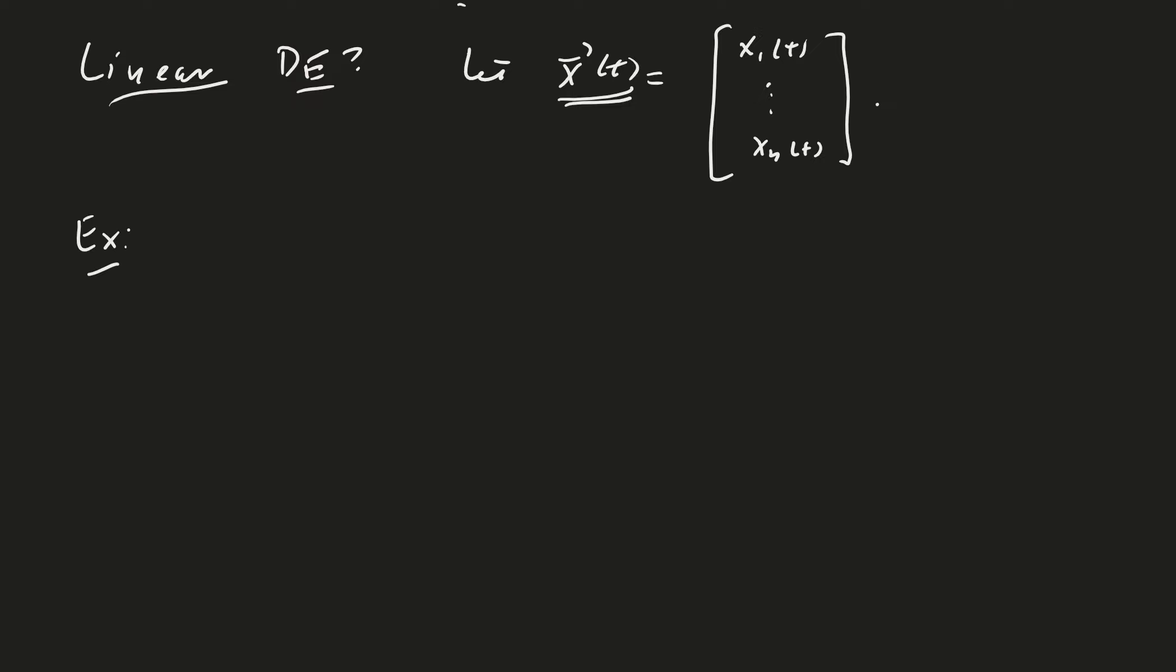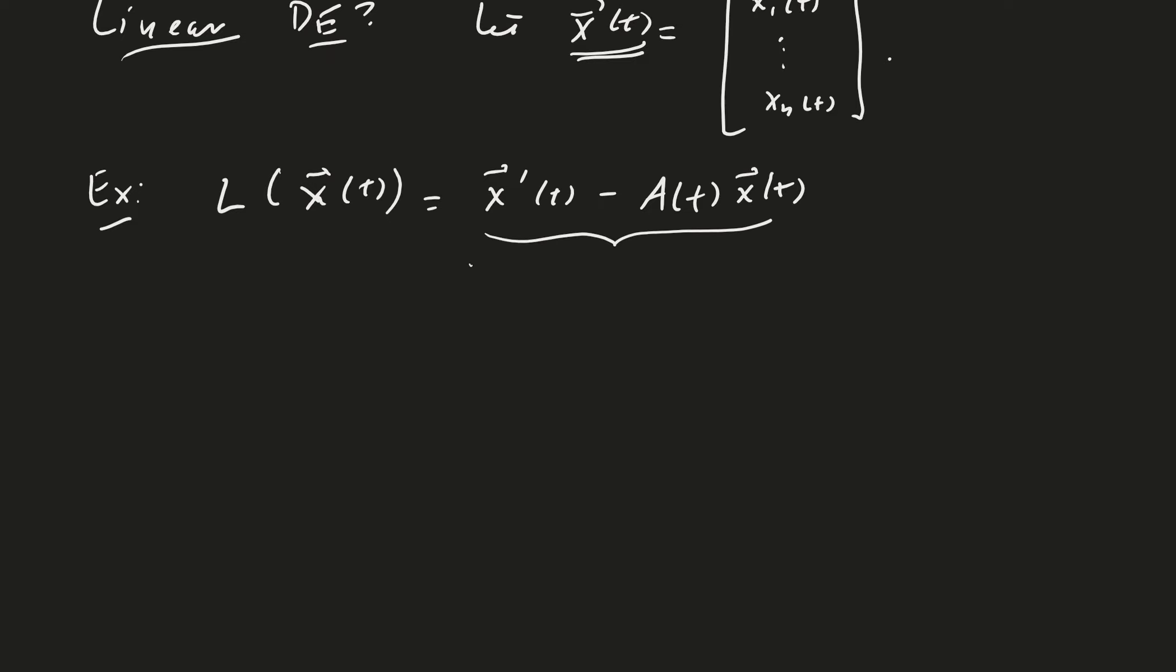So for example, if I have an operator, let's call it L, acting on x of t, and the result is that I take the derivative of x and then I subtract a matrix, and that can be a matrix in t times the x of t. Then this is a linear operation, linear operator, meaning, do you remember the definition? L of x plus y is equal to L of x plus L of y, and L of c times x is c times L of x.